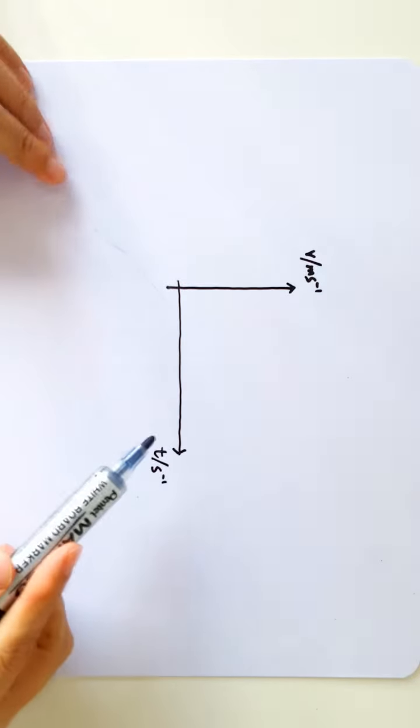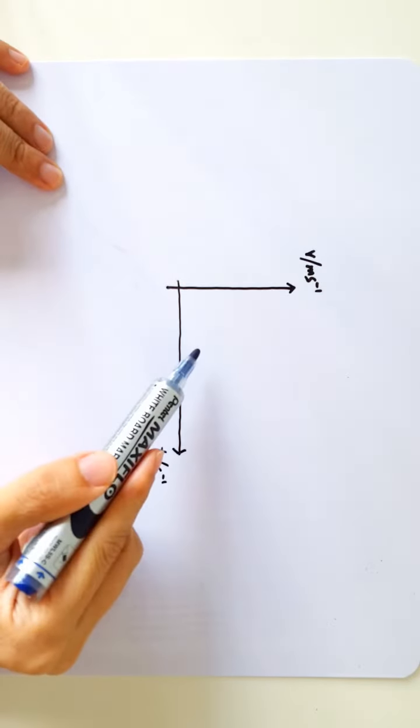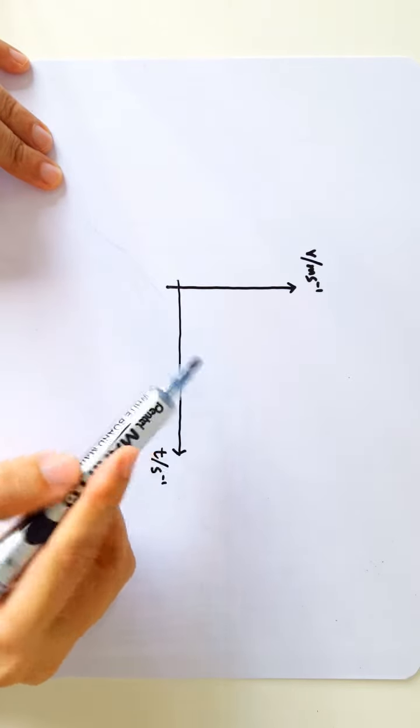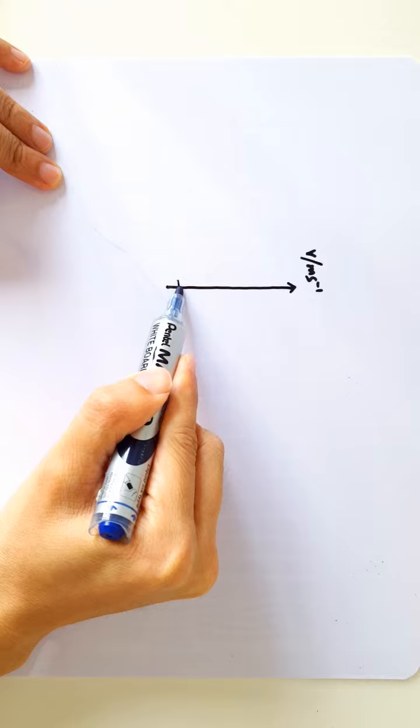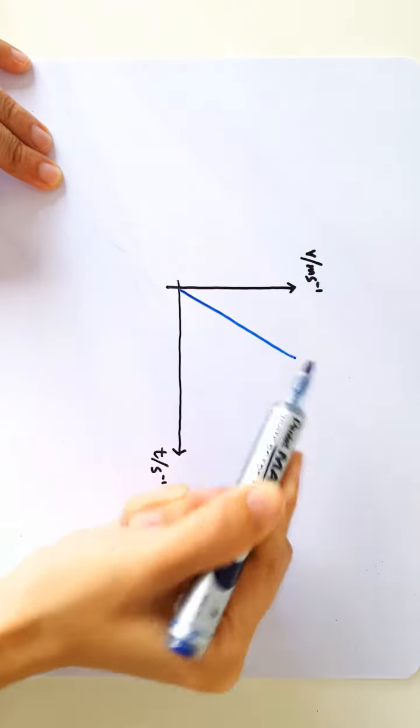We have an object falling from rest on some unknown planet. If there's no air resistance, then the V-t graph should look like this, a straight line graph.